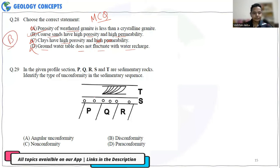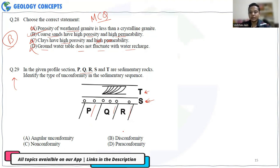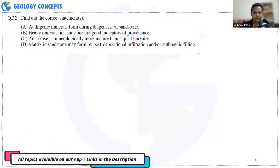This question identifies the type of unconformity between five beds P, Q, R, S, T. Beds S and T are horizontal, while P, Q, and R are inclined at a high angle to them. This oblique relationship confirms that S and T are younger beds deposited after P, Q, and R, and the angular relationship between the sequences indicates an angular unconformity.